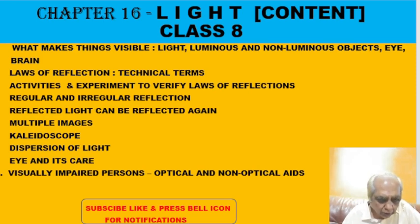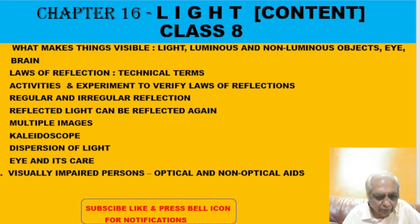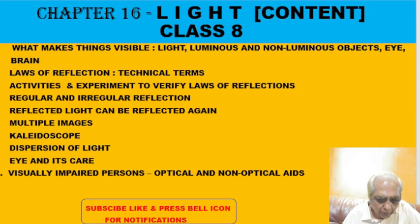We will be learning about laws of reflection, the various technical terms involved, and we will carry out an activity to verify these laws. We will learn that there are two types of reflection: regular and irregular. We will also carry out an experiment and see day-to-day devices where reflected light can be reflected again to form multiple images. We will learn dispersion of light and also about the human eye and the care we should take.